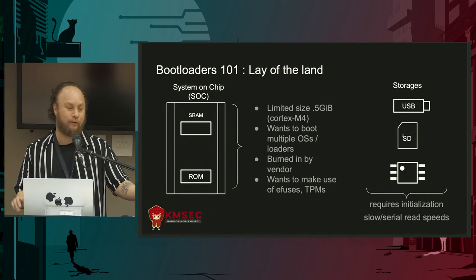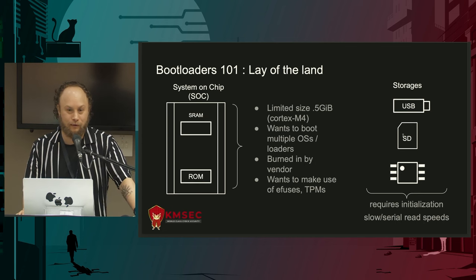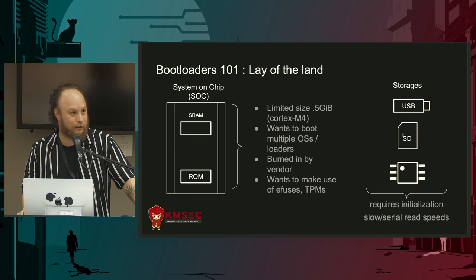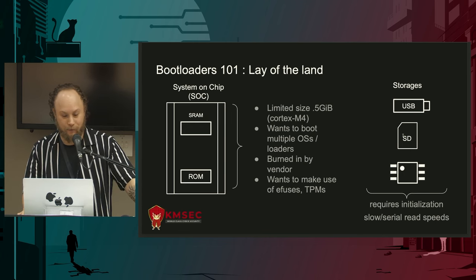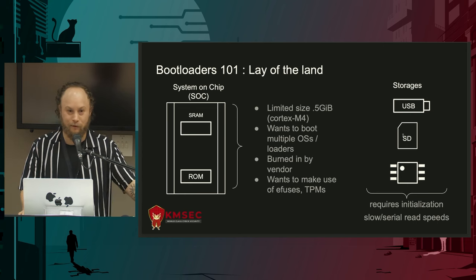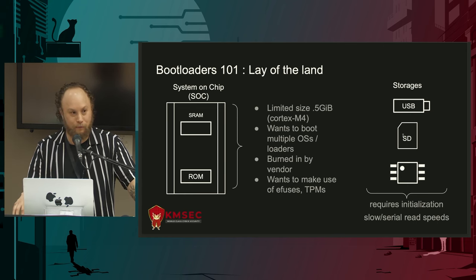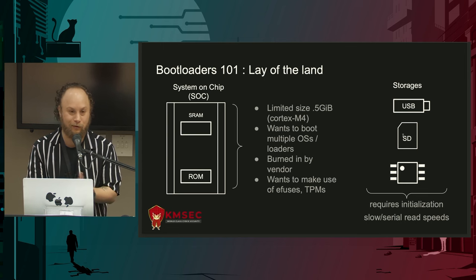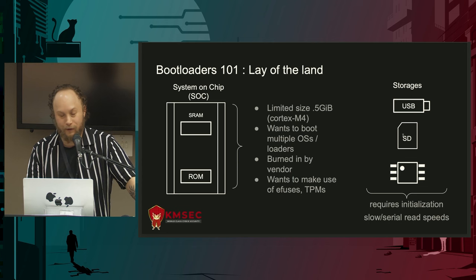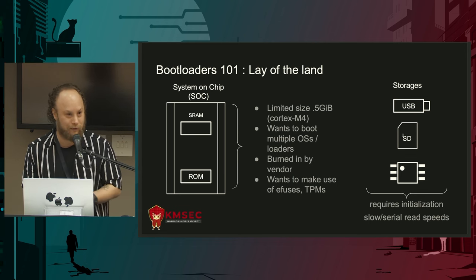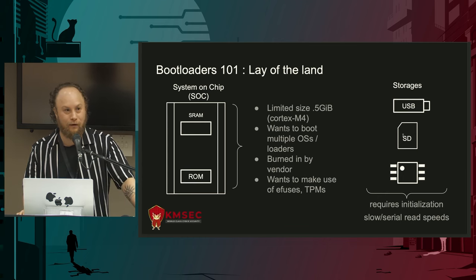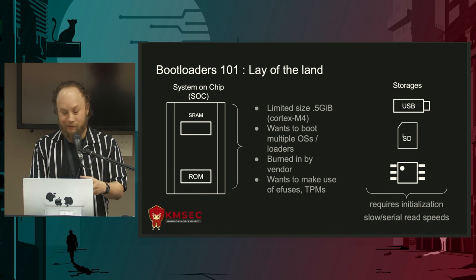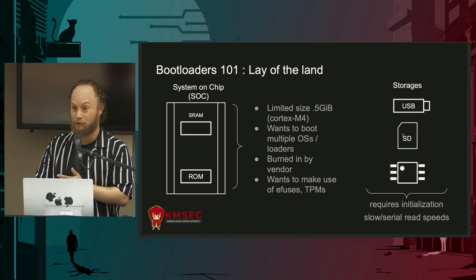Bootloaders 101 — why do you even need one? In typical embedded setups, most of what you'll see today is a system-on-chip, and there are local resources inside it besides the CPU: caches, static RAMs, eFuses, and other things. These are accessible to what runs first, but most of the OS won't be accessible in the initial state because resources are too limited. The ARM Cortex-M4 only has 0.5 gigs of SRAM — you're not going to fit an entire Linux instance in there. So there's a bridging process from these isolated local resources to what's stored on USB, SD card, and serial flashes.